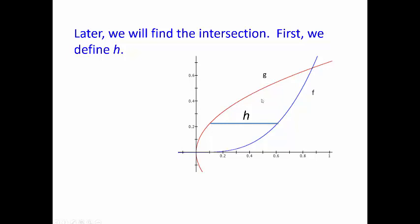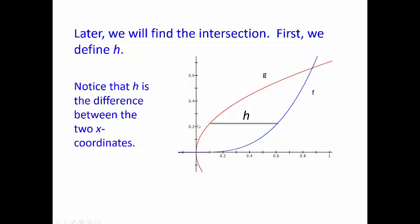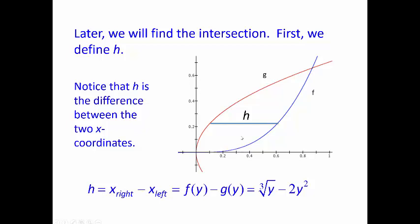Previously when we did vertical height, it was top minus bottom. Here, we're going to have a 'right graph' and a 'left graph.' Notice that h is the difference between the two x-coordinates here, not the y-coordinates, because we have a horizontal height. So the height, when horizontal, is x-right minus x-left — the right graph minus the left graph. Our right graph here was the cube root of y, and our left graph is 2y squared. So our height is just cube root of y minus 2y squared.